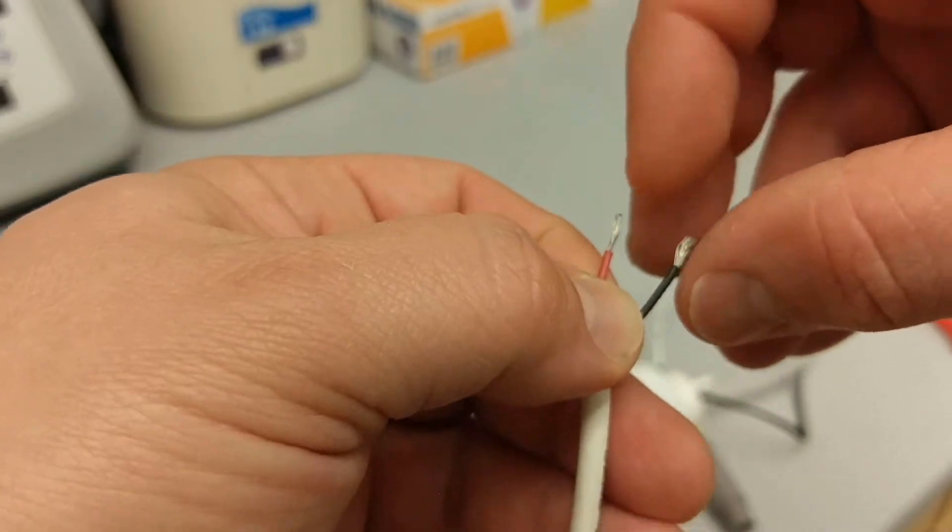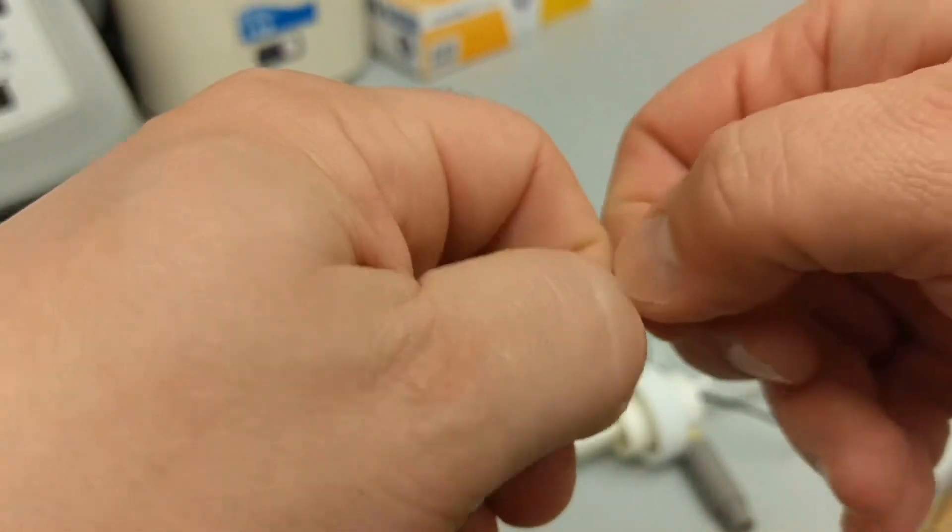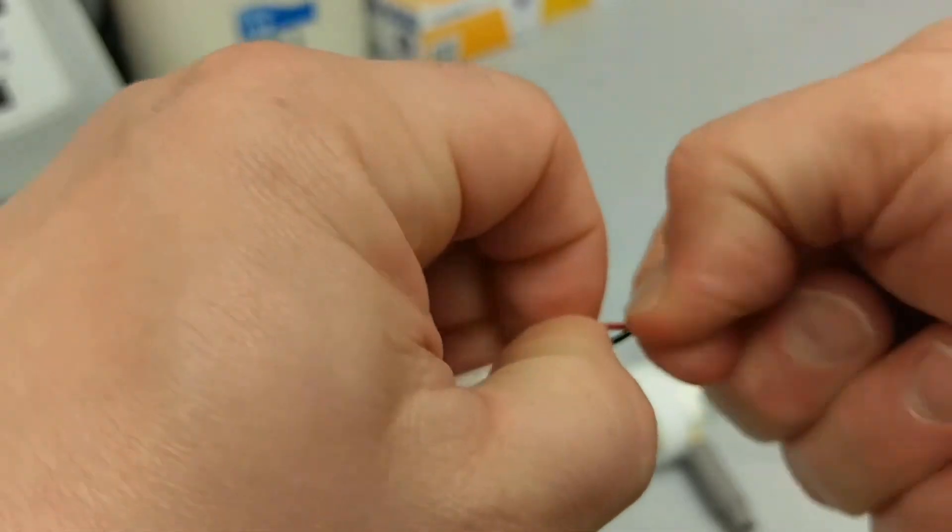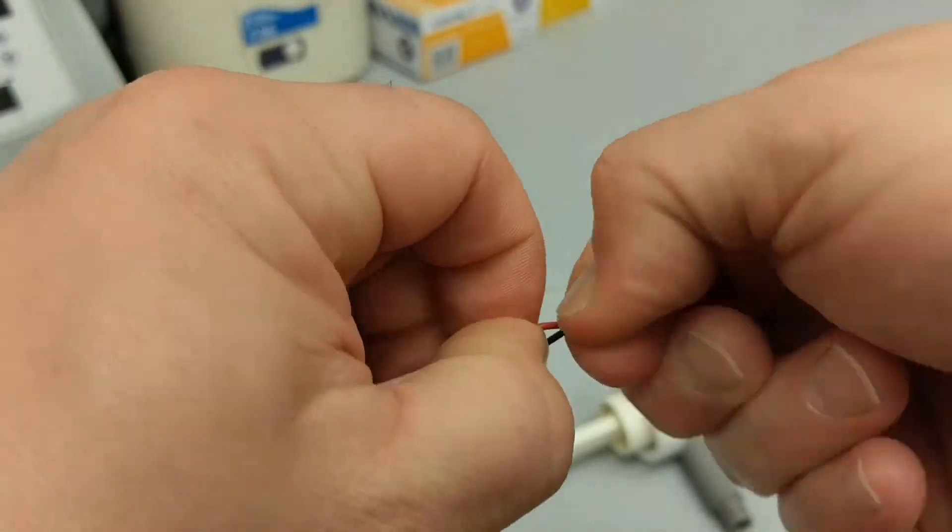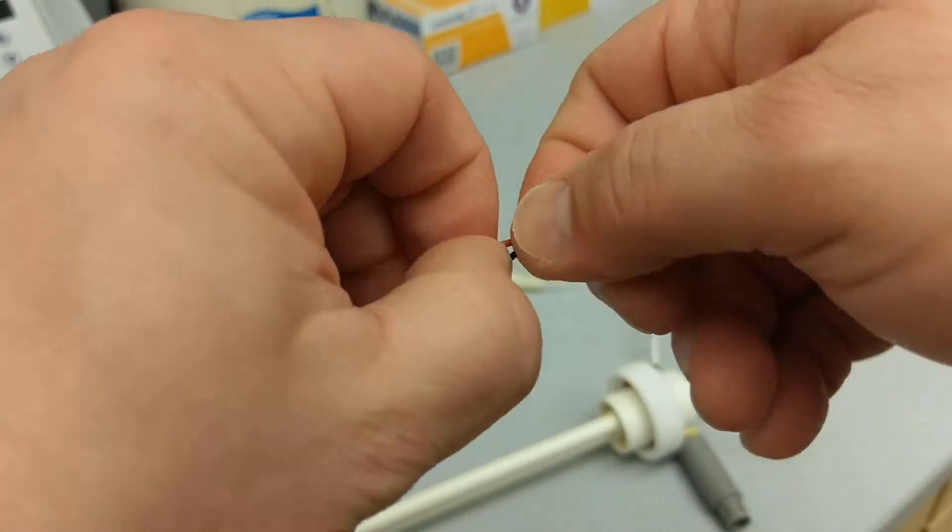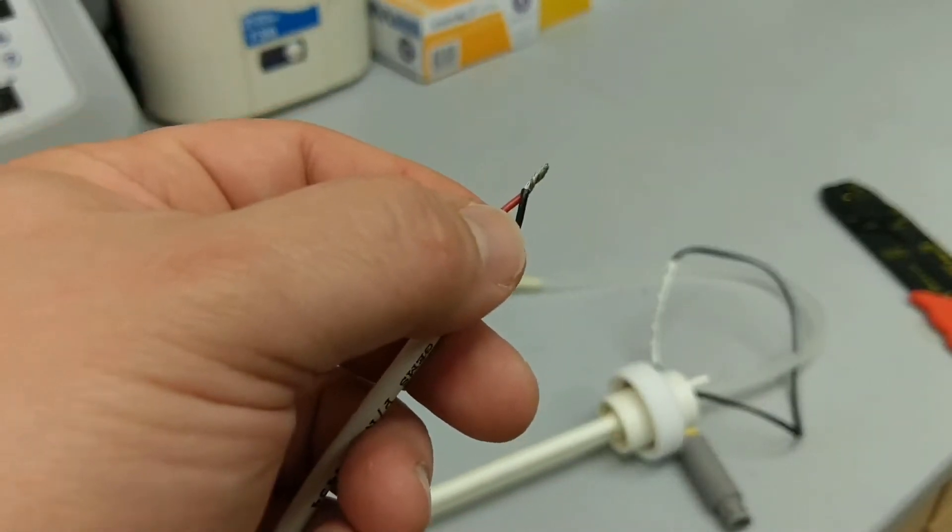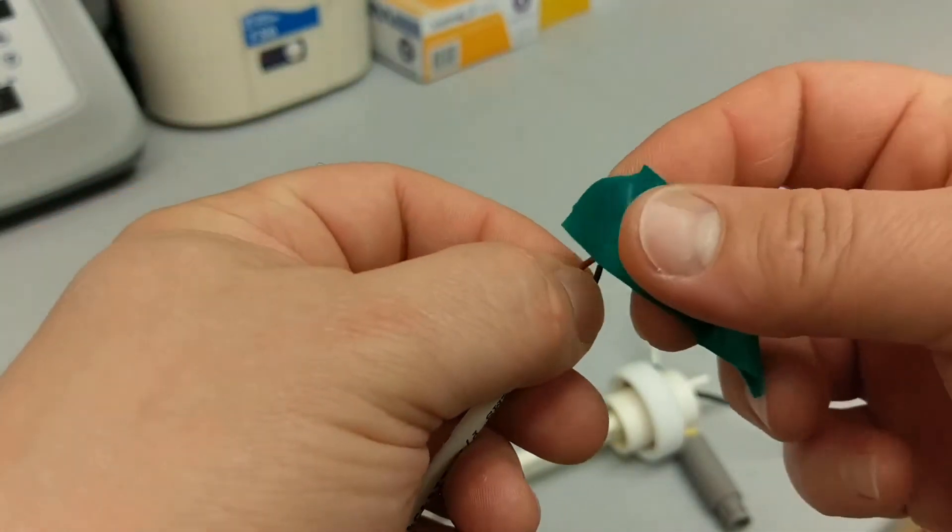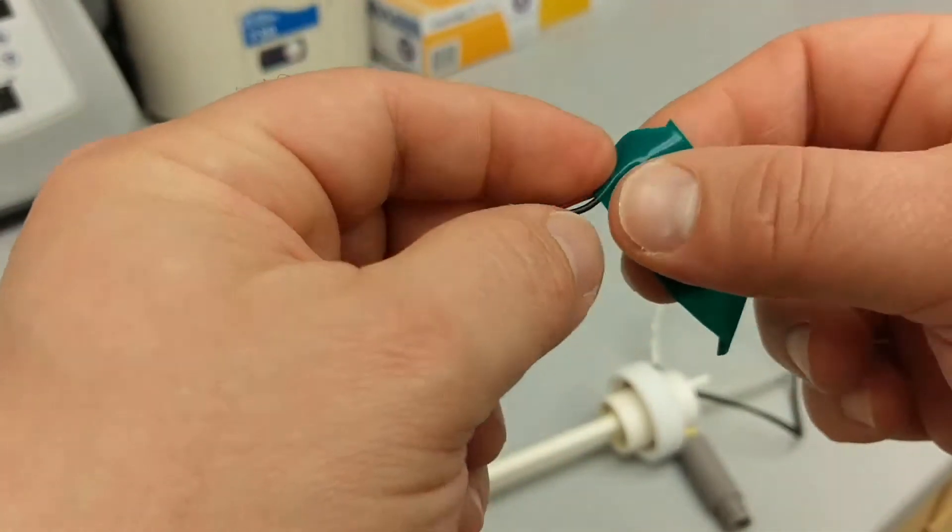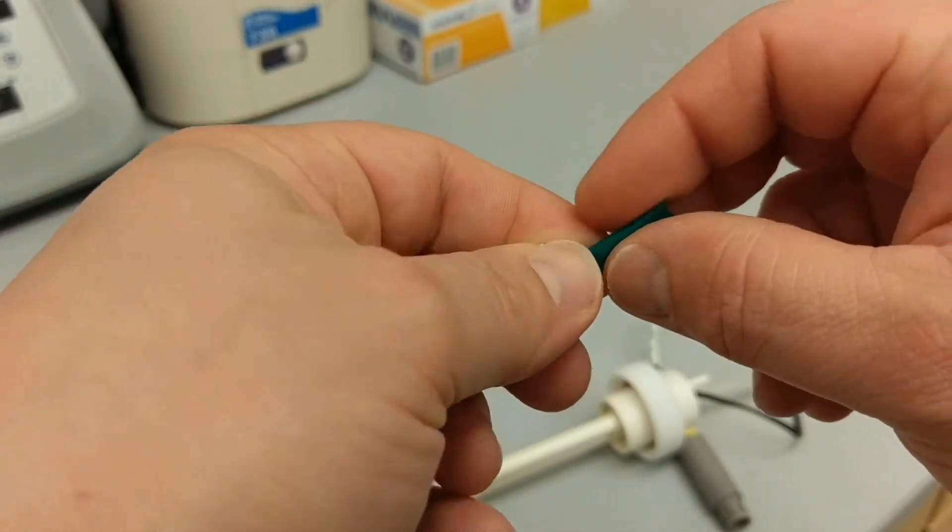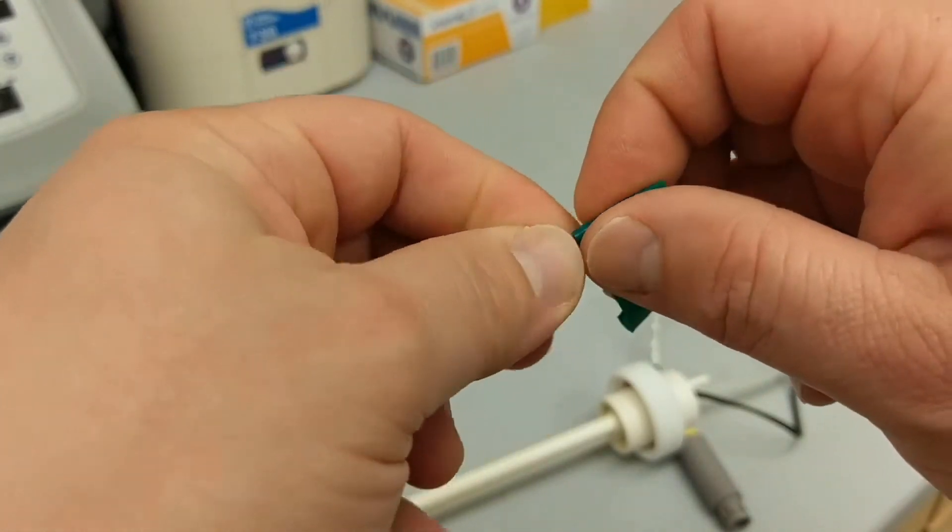And you can artificially complete the circuit just by connecting these two wires, twisting them together, and if you had a little wire cap you could put that on there. Or in my case, I'm just going to use a little bit of electrical tape to tape that connection up.